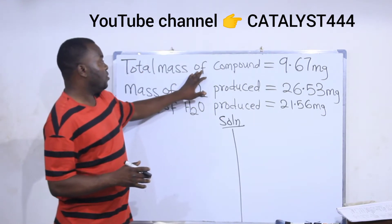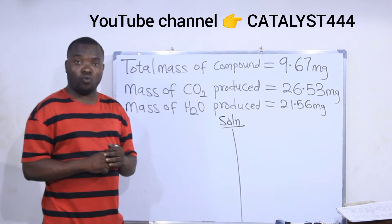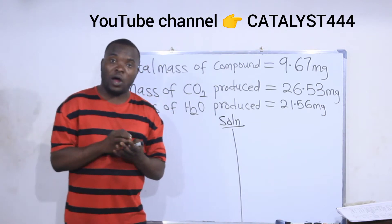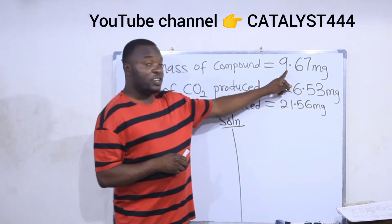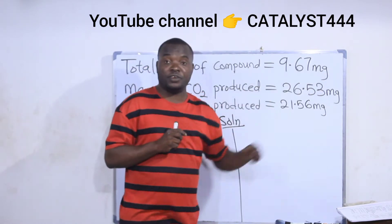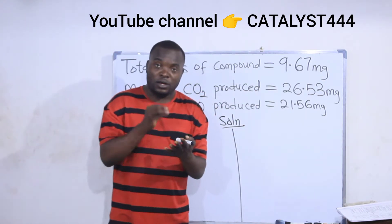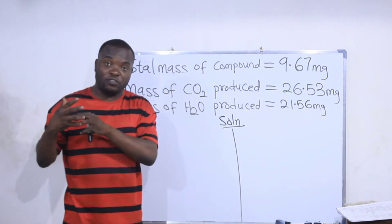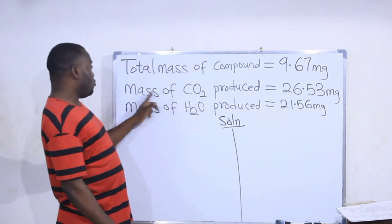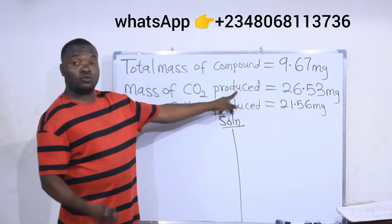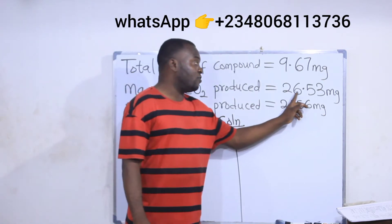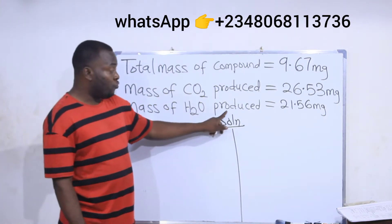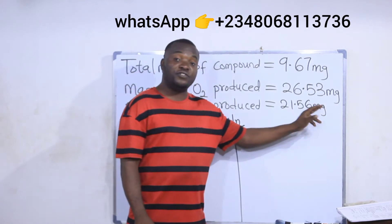These are the values given to us in the question. The total mass of the compound — the sample that was burned — is 9.67 mg. During the combustion, CO2 and water were produced. The mass of CO2 produced during the combustion is 26.53 mg, while the mass of H2O produced is 21.56 mg.